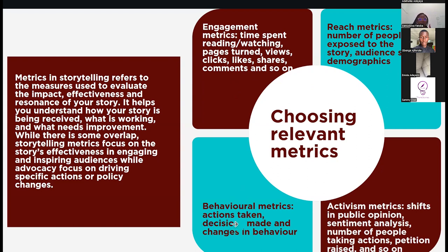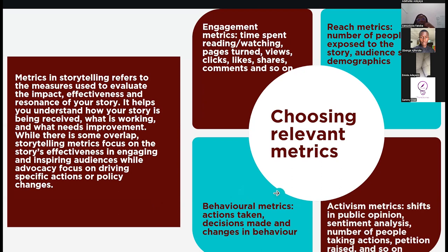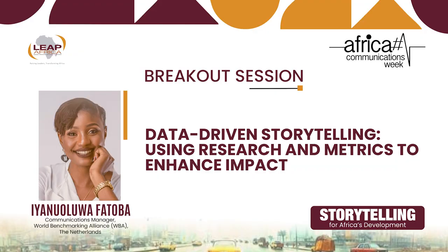Your metrics help you evaluate whether your story is effective. Engagement metrics: time spent reading or watching your content, how many people are sharing, how many are commenting, and what is the quality of those interactions. Reach: how many people are exposed to the story — for example, BBC Africa did one story that went viral. Don't be afraid to realize that one format isn't working and explore others. Behavioral metrics: actions taken as a result of your story — for instance, situations where a social media campaign led the government to announce concrete actions. And activism metrics: sometimes you can't directly measure reach or engagement, but you can measure the quality of conversations — is it creating a ripple effect, where people keep picking it up and mainstreaming the conversation? Those are ways to determine whether your story is effective and reaching the right audience.